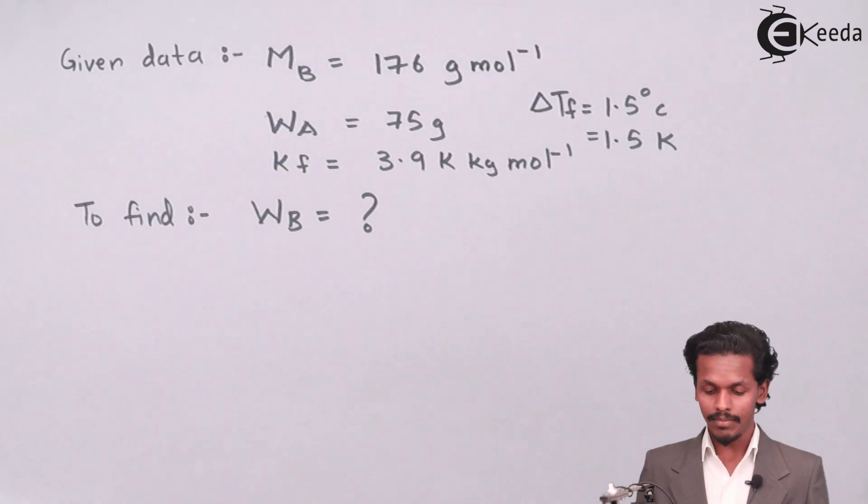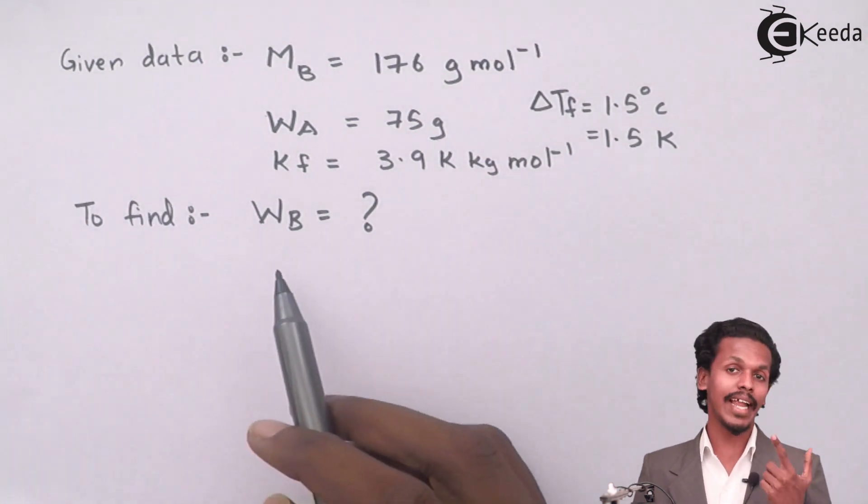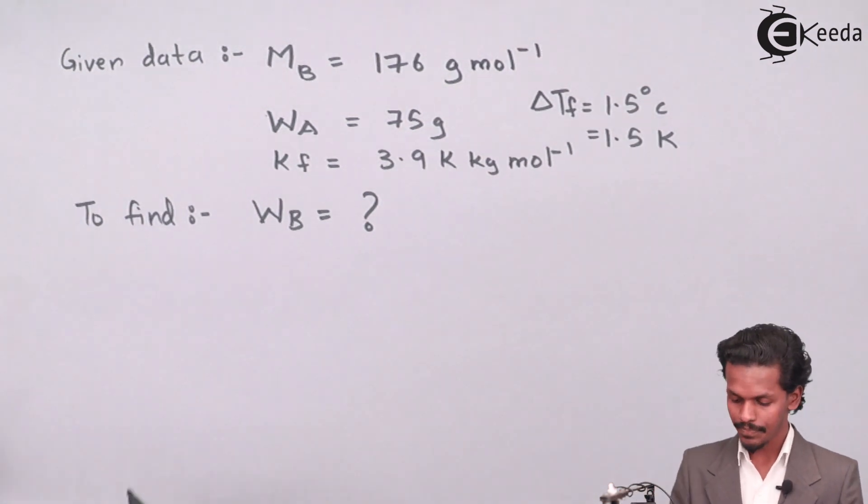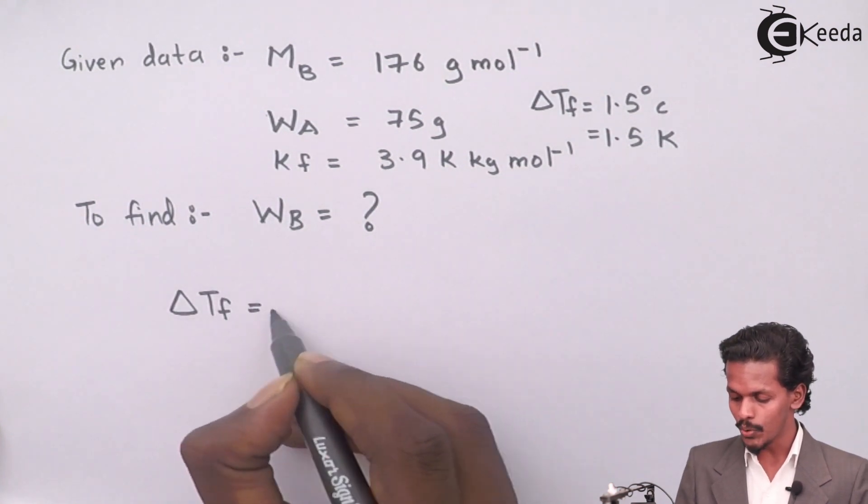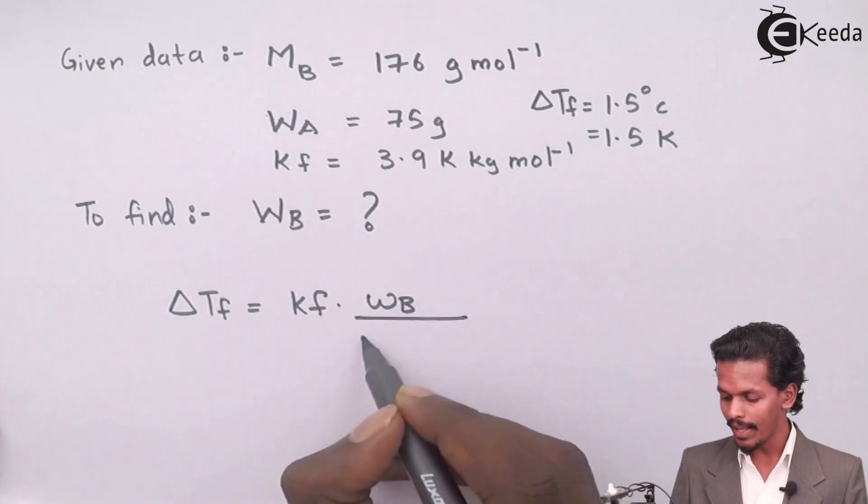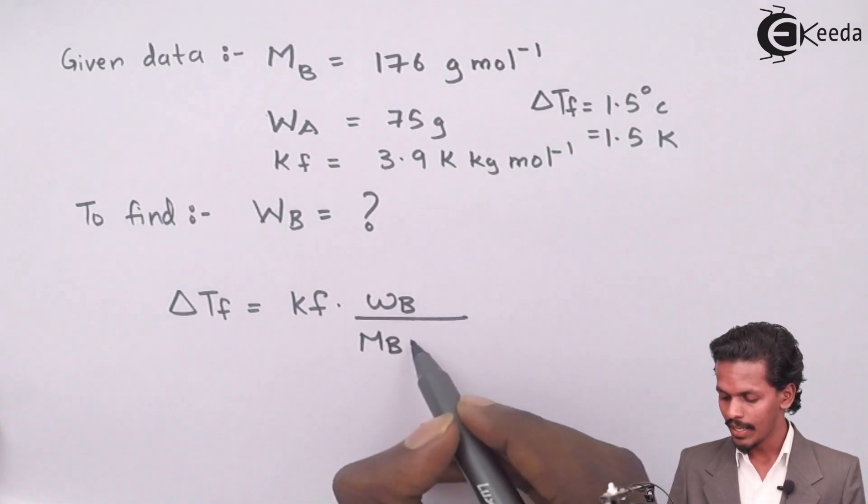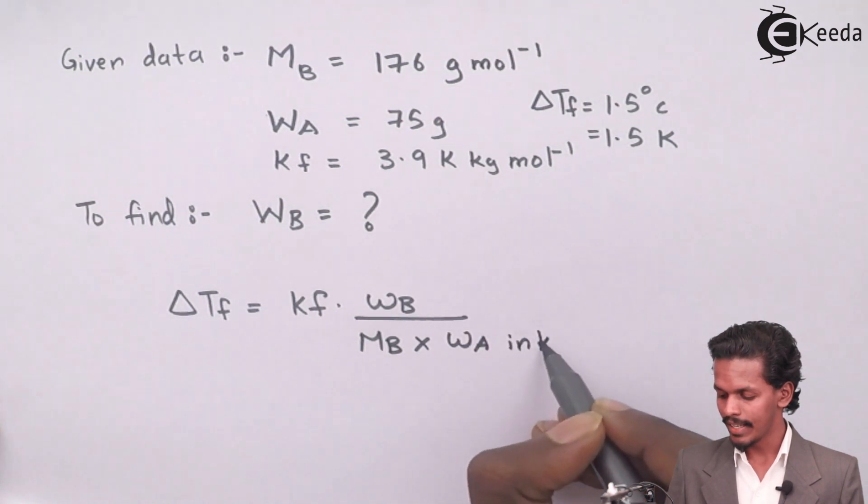Based on this we will calculate the WB. For that you should know the formula: delta TF equals KF into WB divided by MB into WA in kg.